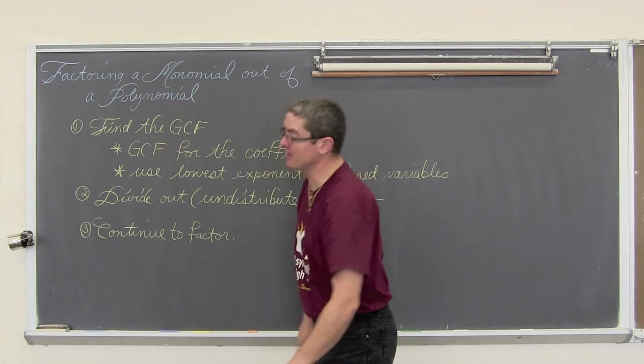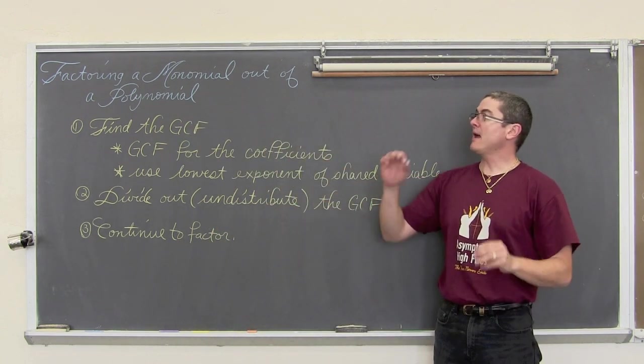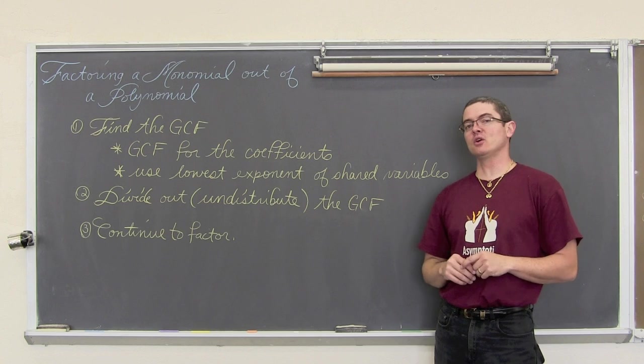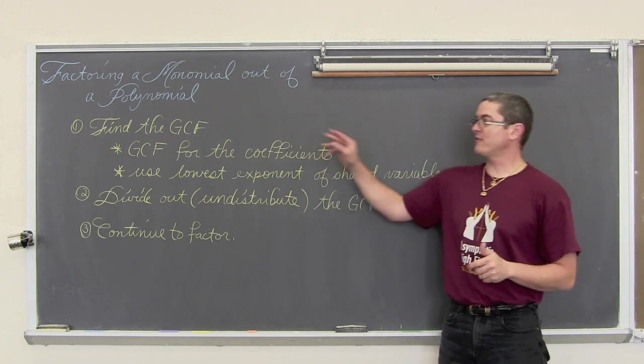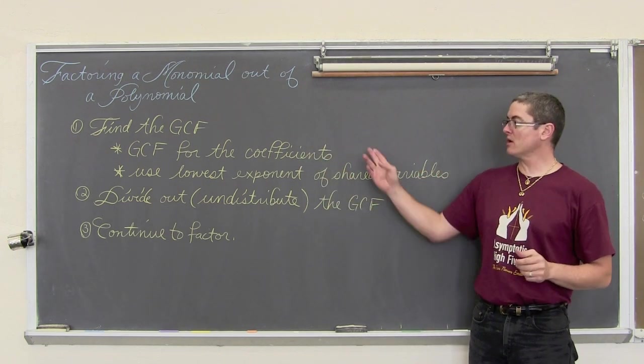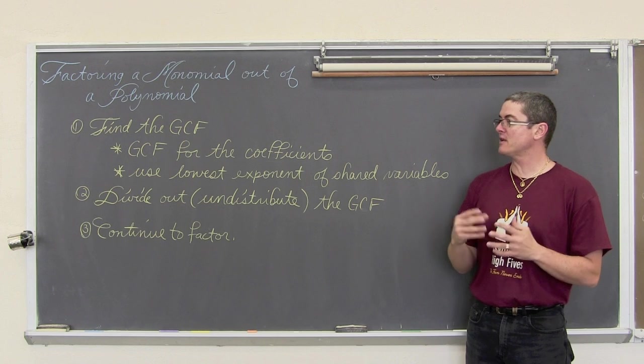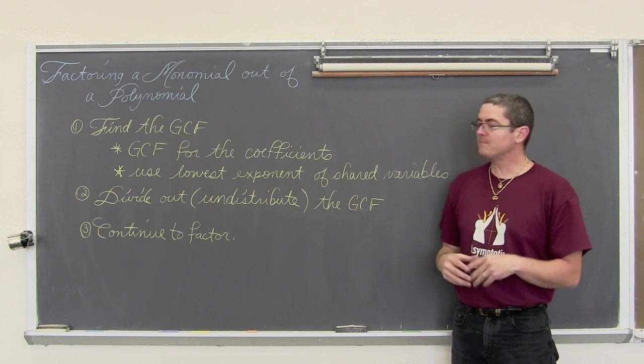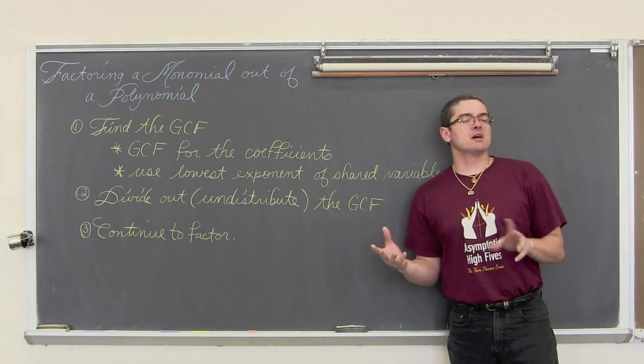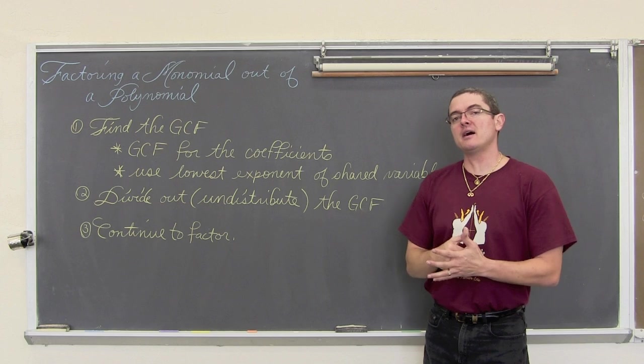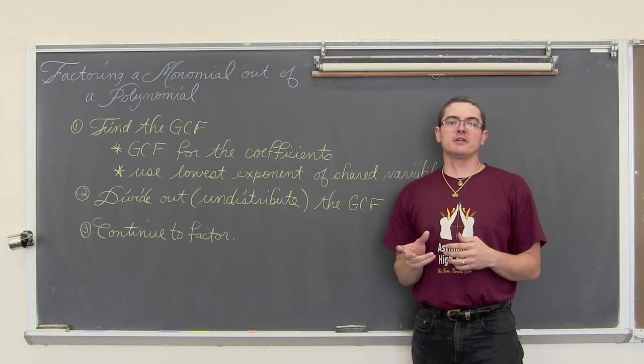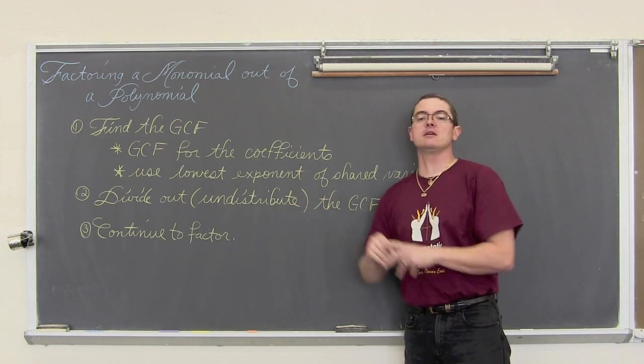BAM! Mr. Troom! In this video we are going to be factoring out a monomial from a polynomial. What we are going to do is find the GCF. Now that means that we are going to look at all the coefficients, all of the numbers, and look at those numbers and find the biggest number that divides into all of the coefficients evenly. That is going to be numerically the GCF.